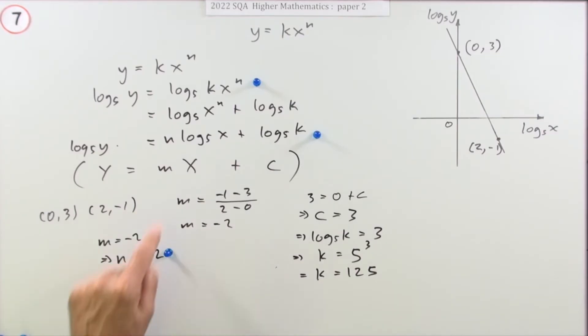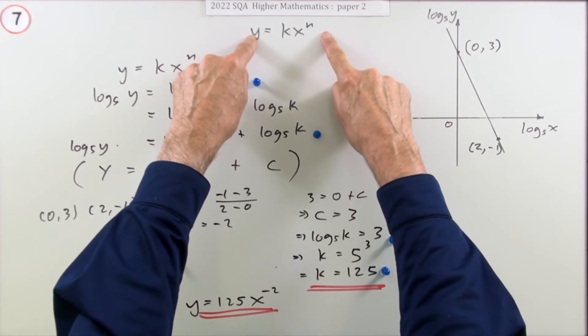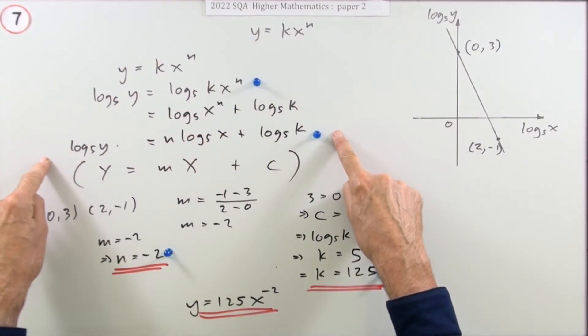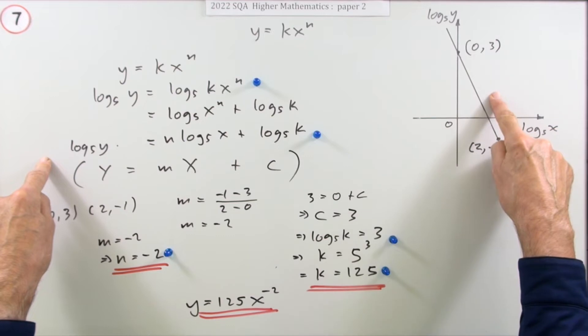Now obviously there was one mark for the n, because that just fell straight out of it. But there was two for getting the k part, because first of all you had to identify with the log, and then you had to solve that little equation. Now it didn't ask you to put that back together again, it just said what's the value of n and k, so that's done. You could finish off if you wanted, so that means it was actually 125x to the power -2. But there was no marks for doing that. So that was one way then, starting with this and expanding that to make it look like a line and then comparing it bit by bit with the line you've actually got.